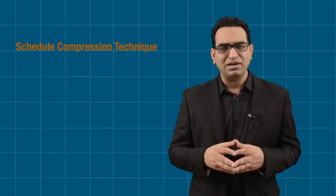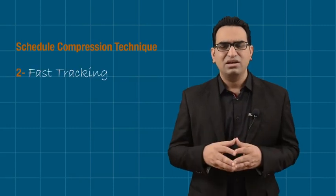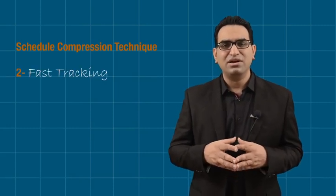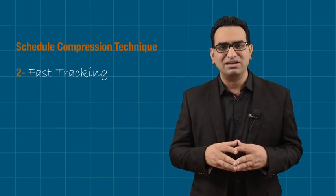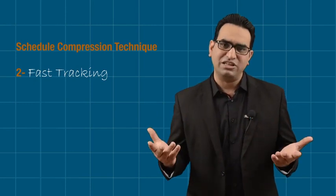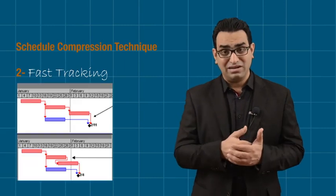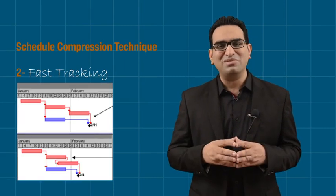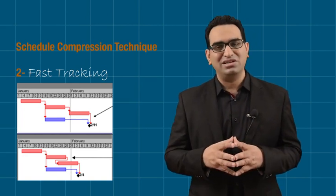Another technique is fast tracking. We've talked about lead. In fast tracking, we select two activities that are in sequence and make them parallel. This works when we have discretionary dependencies. If we have mandatory dependencies, then we cannot do this.